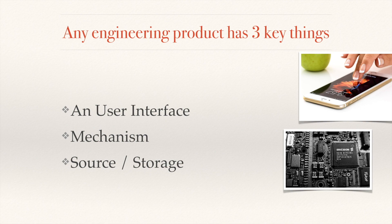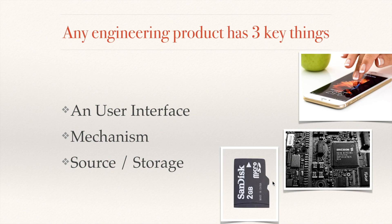Your mobile also has its internals — it has its motherboard, its chip, and all the circuits. This is the complex part and we don't show it to the user. This is actually the brain of the mobile; this is controlling everything, controlling the whole flow. And then the last thing is storage — a memory chip, or you may also use your mobile's internal memory to store data, photos, or music.